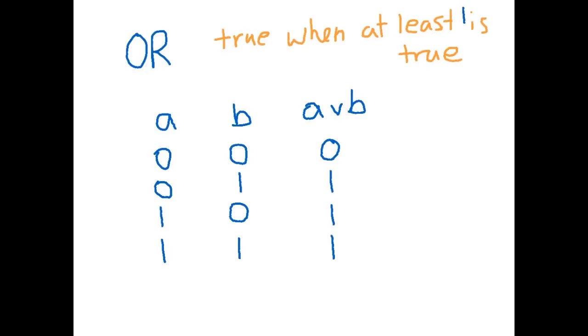Now if we were writing a Boolean expression, we would use a little V to use the OR symbol. If we were drawing a circuit diagram similar to the AND, we've got two inputs, or three if you were using three.